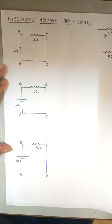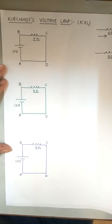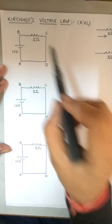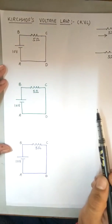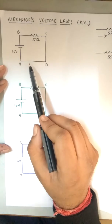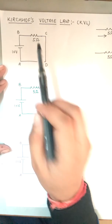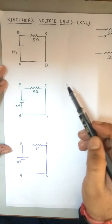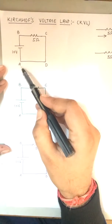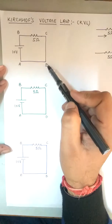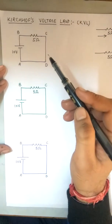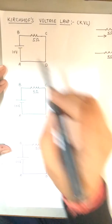Welcome. Here I explain Kirchhoff's Voltage Law using a very basic question in which there is a battery and a resistance connected in series. I am taking this problem: a 10 volt battery is connected in series with a 5 ohm resistance. Before solving the problem, we will name the edges of the circuit — a, b, c, d — which you can take either clockwise or anticlockwise.